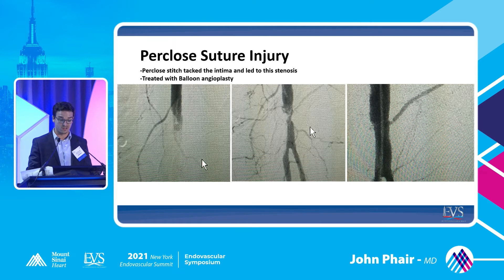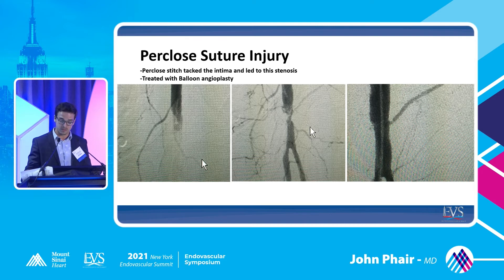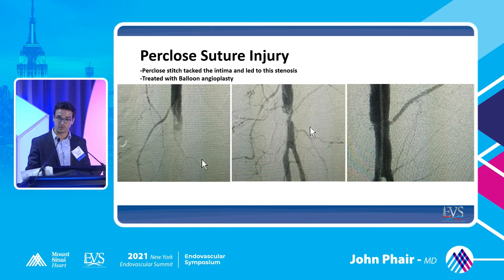Per-close can also cause other injuries. This is a case where the per-close suture actually pulled some of the intima and closed off the vessel temporarily. These are a little bit different — this was treated with balloon angioplasty. With simple balloon angioplasty, we were able to tack down the plaque similar to what we'd see in a normal dissection, and prolonged low-pressure angioplasty opened up the vessel to a normal size.